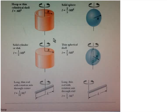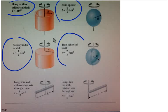So the objects that it lists are a hoop, a solid cylinder, a solid sphere, and a hollow spherical shell.